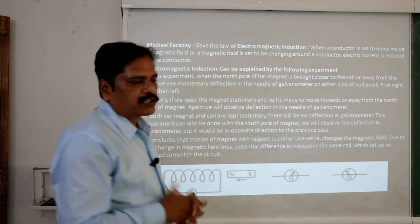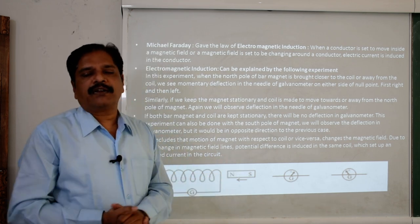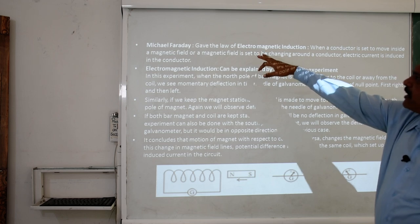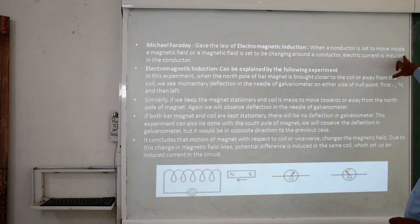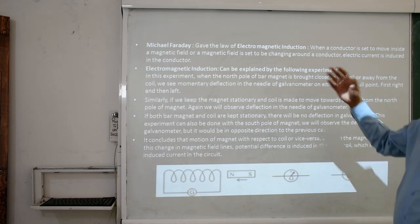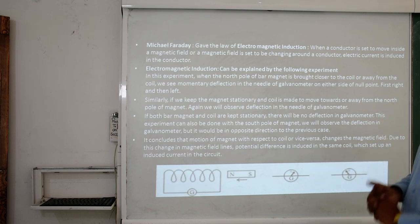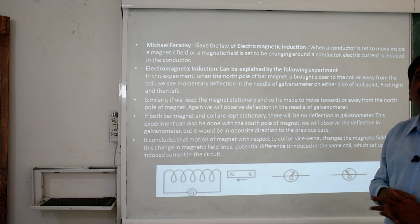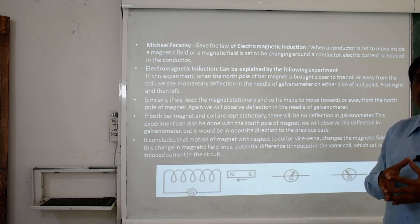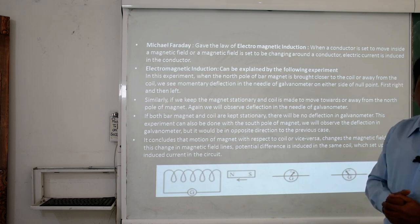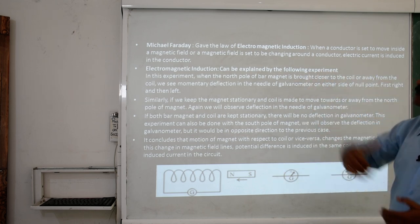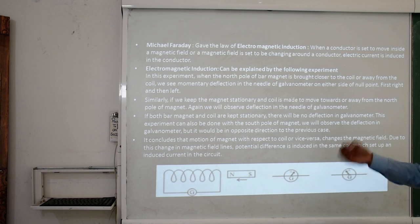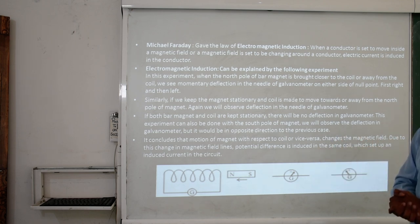Remember the structure of the electric motor, its principle, its functioning, and its uses. Now, Michael Faraday gave the law of electromagnetic induction: when a conductor moves inside a magnetic field, or the magnetic field changes around a conductor, an electric current is induced in the conductor. If there is a continuous change in the magnetic field around a coil, it is responsible for generating electric current. This is called electromagnetic induction.